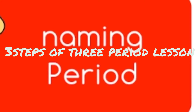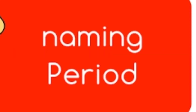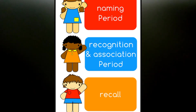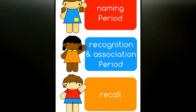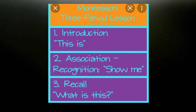The three-period lesson is divided into three steps. The first step is called Introduction. The second step is called Association, or Identification. The third period is called Recall, also known as the Questioning period. In the first part we introduce the name of the vocabulary to the child at least three times. In the second period we reinforce the concept, and in the third period we put a simple question to the child.